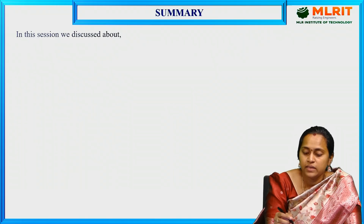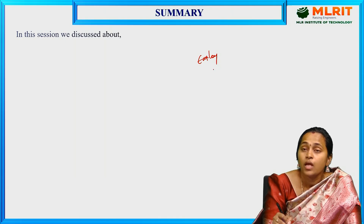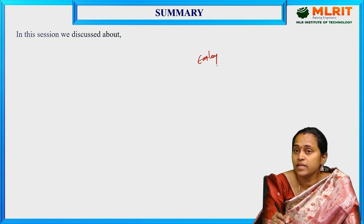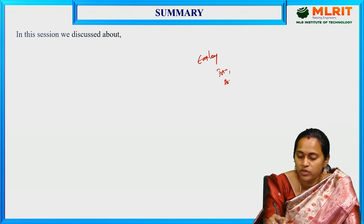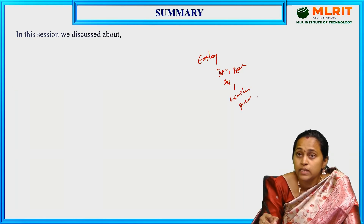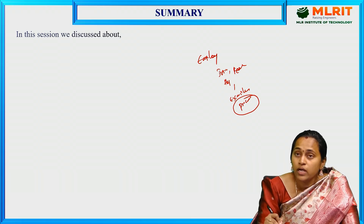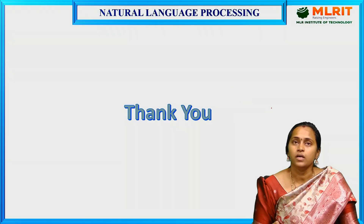This is the basic idea about the Earley parser. In this lecture we discussed the introduction to the Earley parser, the algorithm overview, features of the Earley parser, an example state, the different types of process states - Predictor, Scanner, and Completer - and we discussed a combined example using all the process states. Thank you.